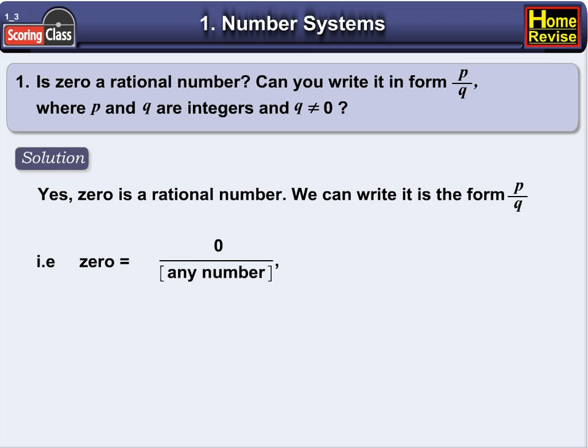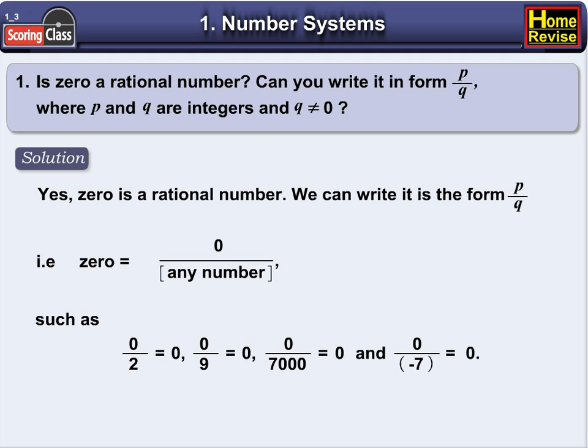That is, 0 is equal to 0 upon any number, such as 0 upon 2 is equal to 0, or 0 upon 9 is equal to 0, or 0 upon 7000 is equal to 0. Even 0 upon minus 7 is equal to 0.